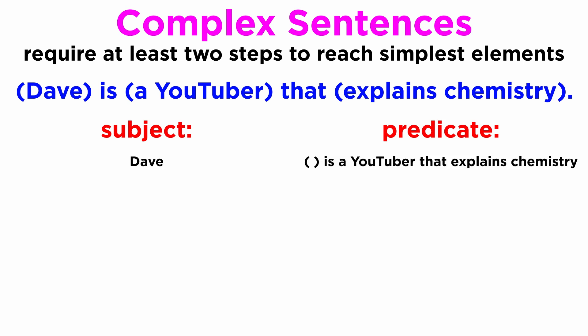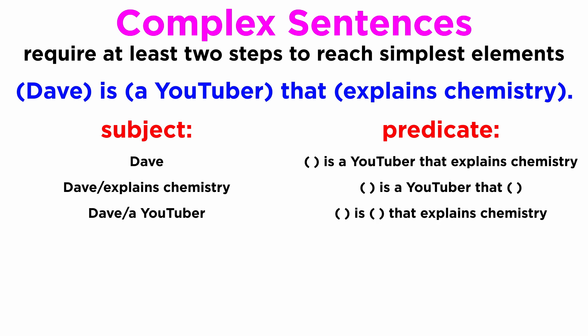One, with Dave as a subject, and () is a YouTuber that explains chemistry as a predicate. Two, Dave and a YouTuber as subjects, and () is () that explains chemistry as a predicate. Four, Dave, a YouTuber and explains chemistry as subjects, and () is () that () as a predicate.